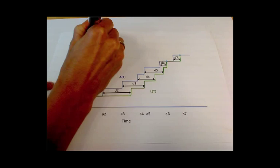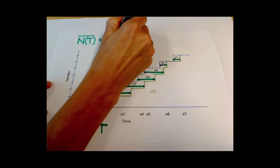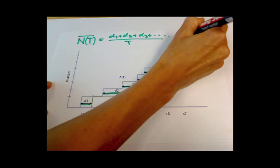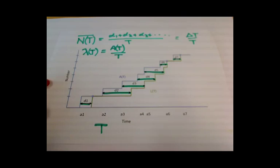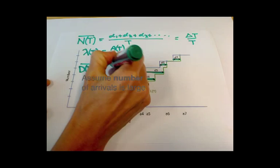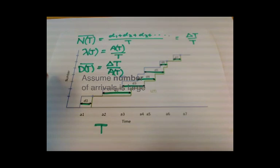The average number in the system over time T is the sum of the time spent for each customer divided by T. The average arrival rate over this time is the total number of arrivals in this time divided by T. An average delay is the sum of the delays divided by total number of arrivals.